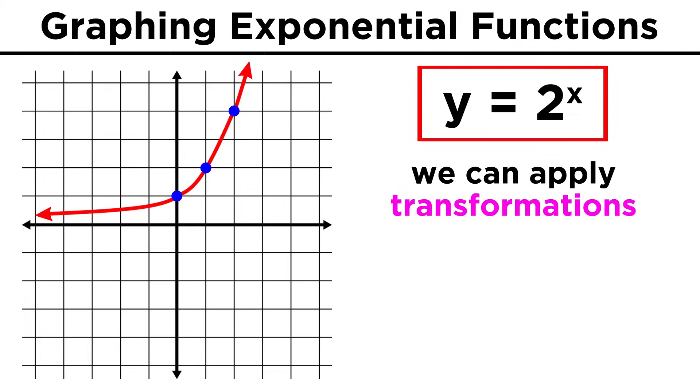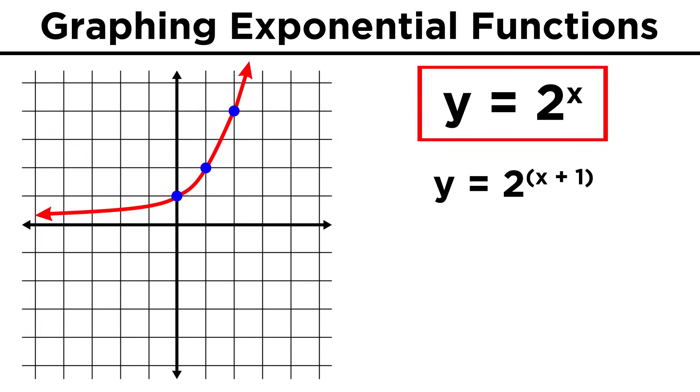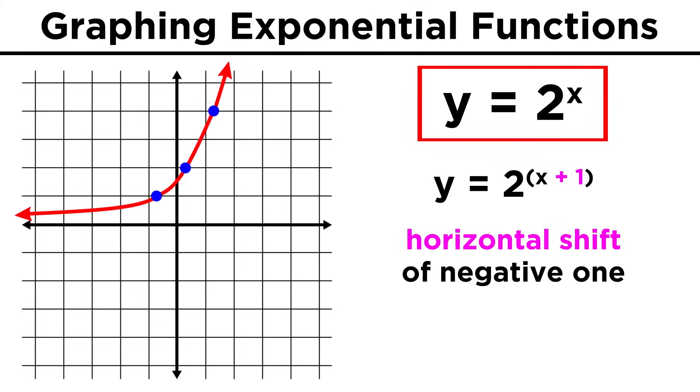As we said, we can graph alterations of this basic form by applying transformations. Adding or subtracting a number here will generate a vertical shift. Adding or subtracting a number from the variable term right here, like two to the x plus one, will produce a horizontal shift.